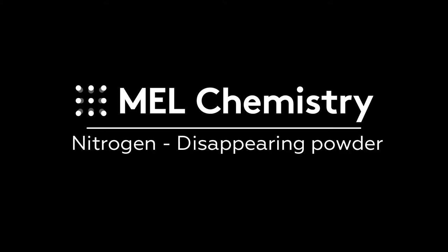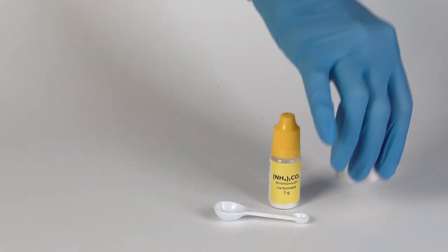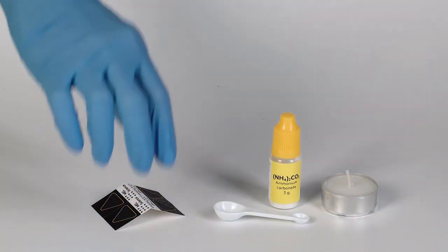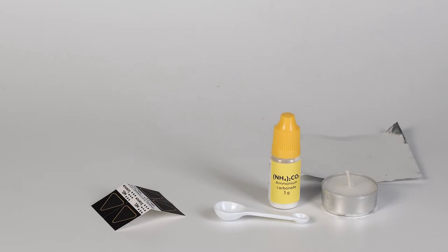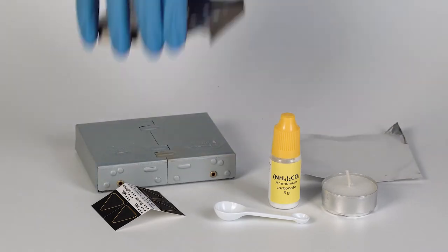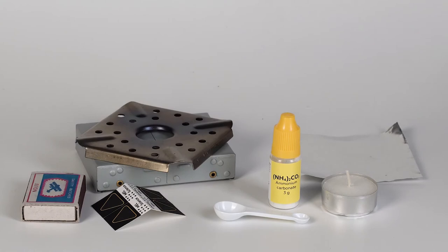For the disappearing powder experiment, you'll need ammonium carbonate, a measuring spoon, a candle, thermochrome stickers, and a sheet of foil. You will also need the solid fuel stove and the flame diffuser from the starter kit, as well as some matches.